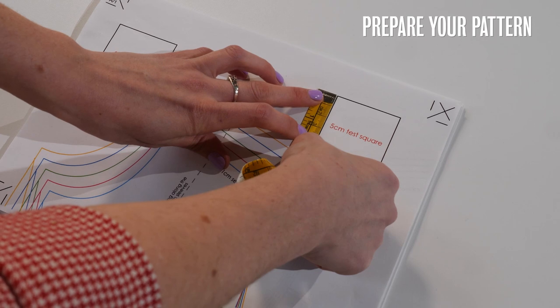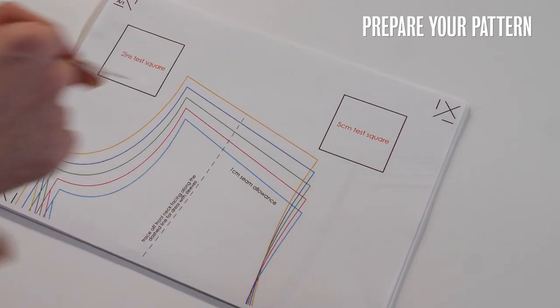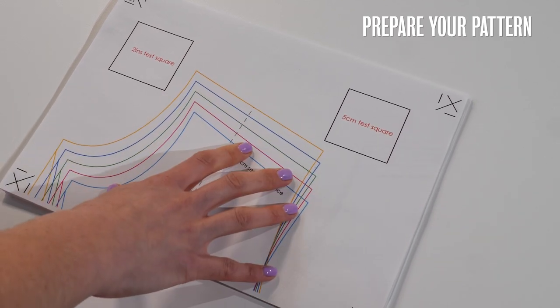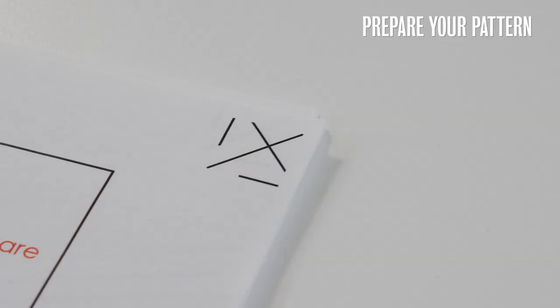So this is five centimeters and there's five centimeters there. If there was an issue I'd need to go and look at my printer settings. So once we're happy with that then I printed out the rest of the pattern and it's time to lay out my pages.